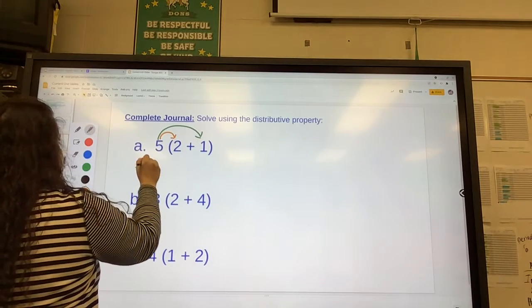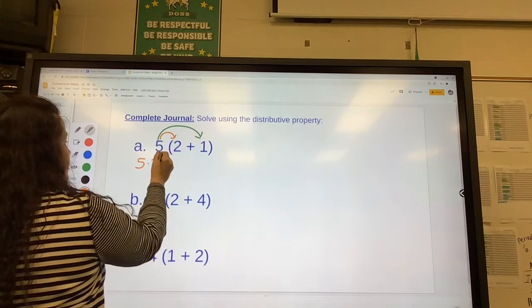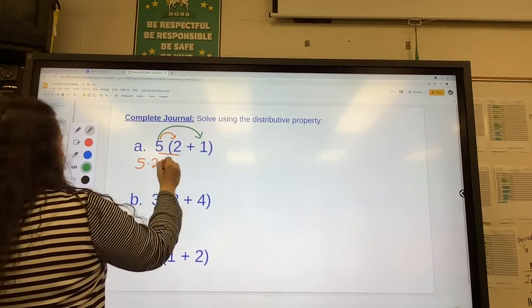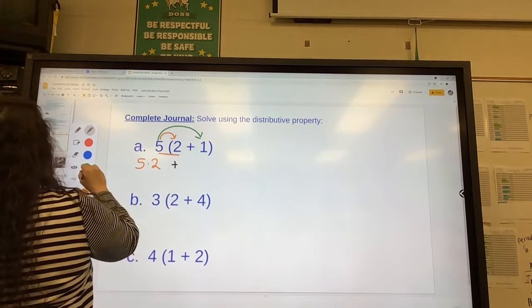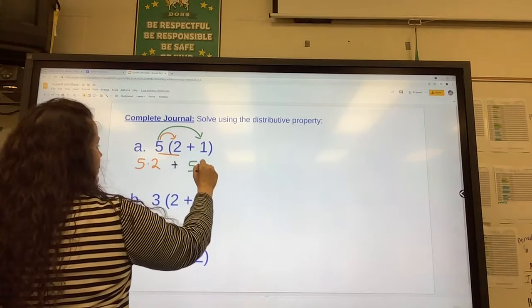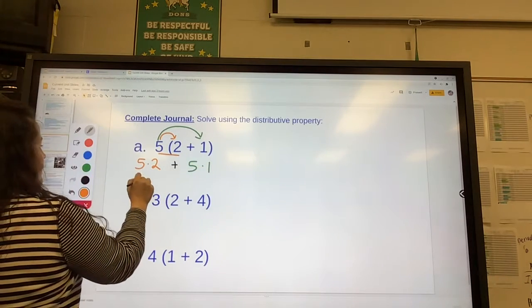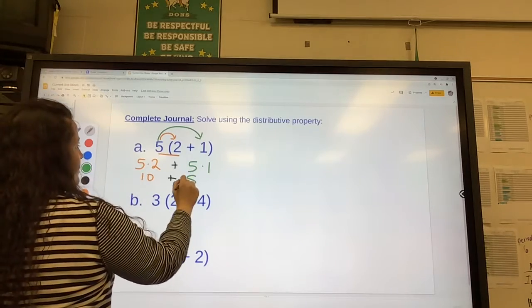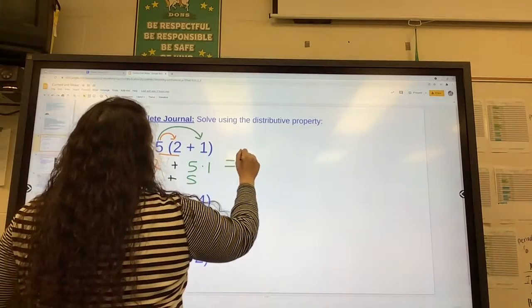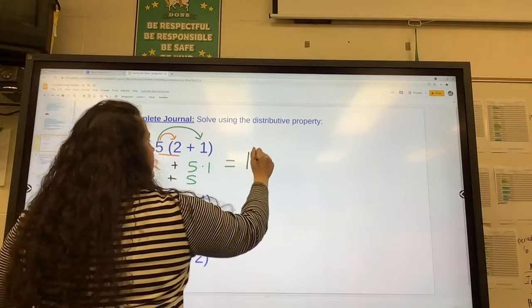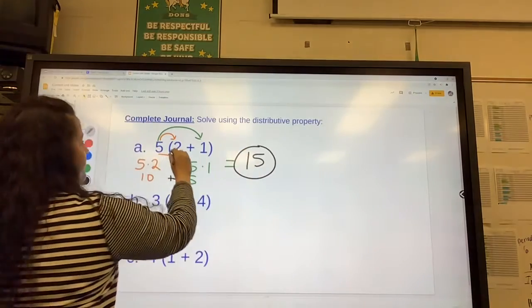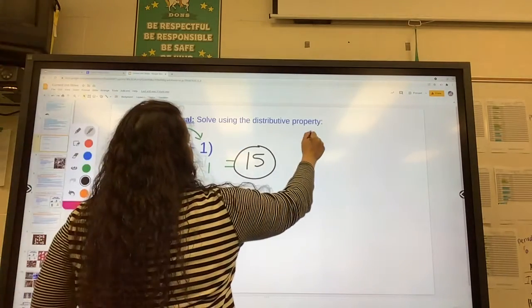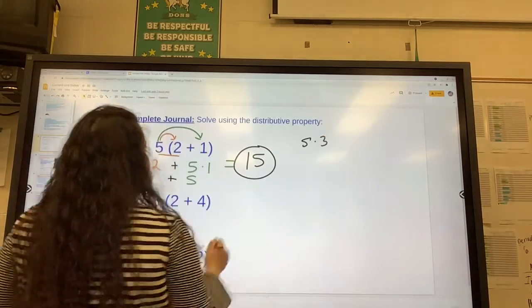So 5 times 2 is the first set, right? And then you keep the plus. 5 times 1. 5 times 2 is 10. 10 plus 5 equals 15. If you added this first, you would get 5 times 3, which would get 15 as well.